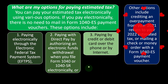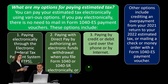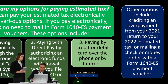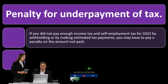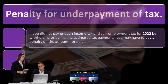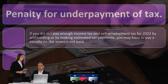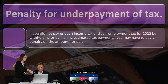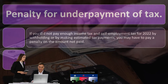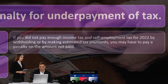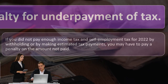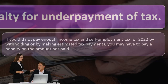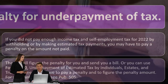You can also mail a check or money order with a Form 1040-ES payment voucher. Regarding the penalty for underpayment of tax: if you did not pay enough income tax and self-employment tax for 2022 — whether through withholding or estimated tax payments — you may have to pay a penalty on the amount not paid.